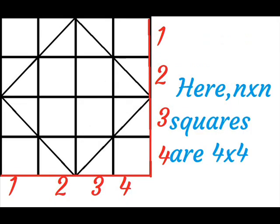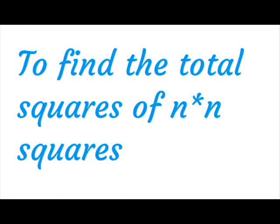In this figure, n cross n squares are 4 into 4. To find the total squares of n into n squares.